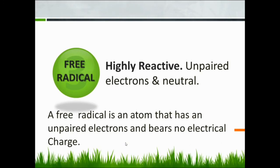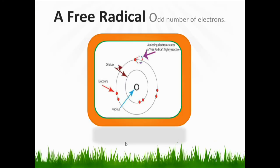Free radicals are highly reactive and have unpaired electrons, and they are neutral. A free radical is an atom that has an unpaired electron and bears no electrical charge. An odd number of electrons must be present. Observe the diagram — the nucleus is at the center with electrons in the orbit. If the electrons are present in an odd number, it is considered a free radical.